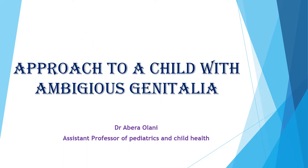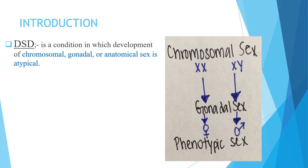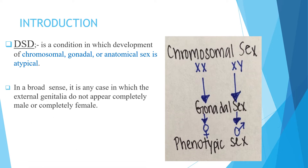Welcome back everyone. Today's lesson is about approach to a child with ambiguous genitalia. Disorder of sexual development (DSD) is a condition in which development of chromosomal, gonadal, or anatomical sex is atypical. In a broad sense, it is any case in which the external genitalia do not appear completely male or completely female.